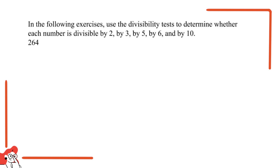The number given is 264. So this is the number, and we're asked to use the divisibility test to determine whether 264 is divisible by these five numbers. What this means is, if we divide 264 by these five numbers...